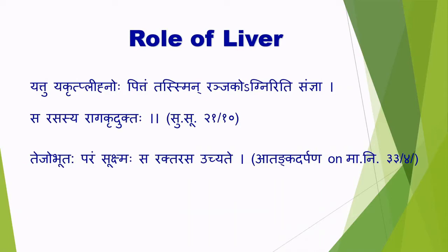It has been mentioned in Shonita-vah-srutas that the Pitta which is present in Yakrit and Pleha contains the Agni known as Ranjaka Agni. So Ranjaka Pitta contains Ranjaka Agni — that is how it has to be understood. The Pitta residing in Yakrit and Pleha contains Ranjaka Agni. The function of this Ranjaka Agni is to give colour to the Rasa, so Rasa becomes coloured because of the action of Ranjaka Agni.